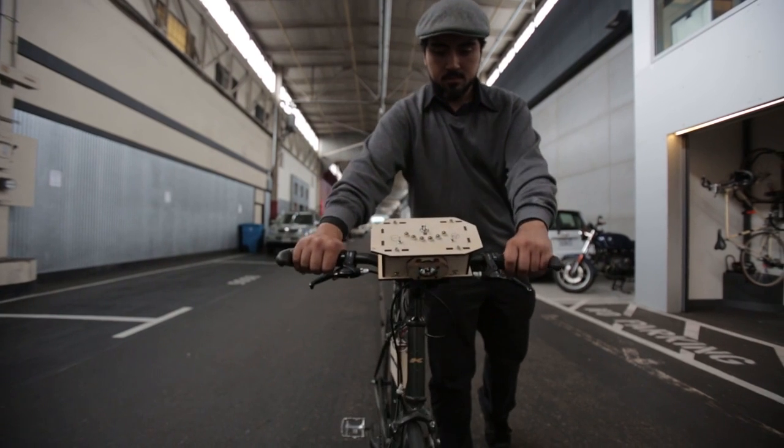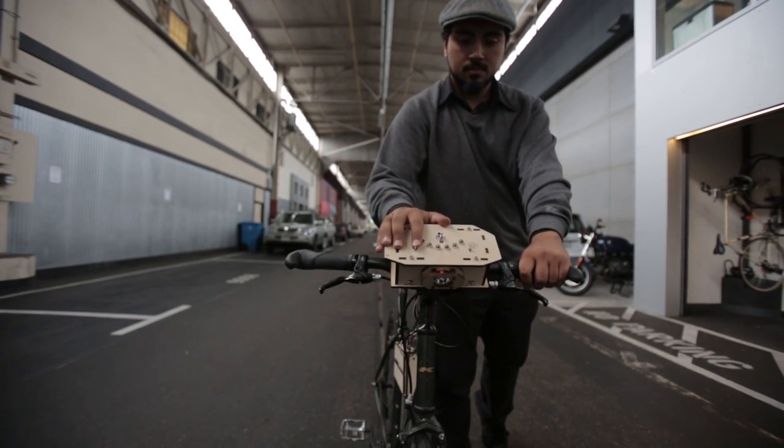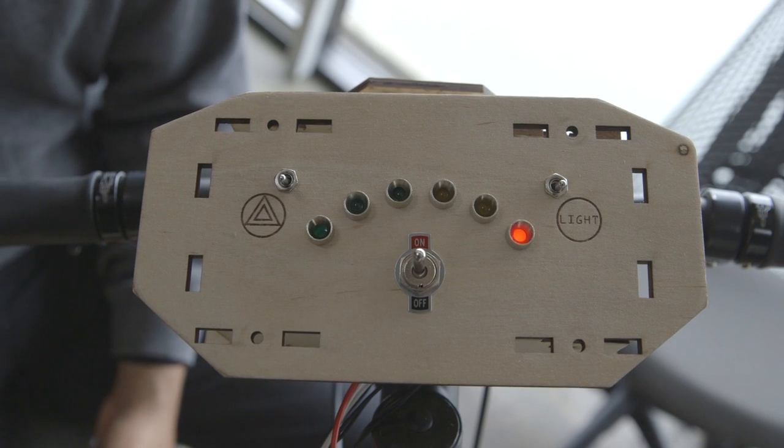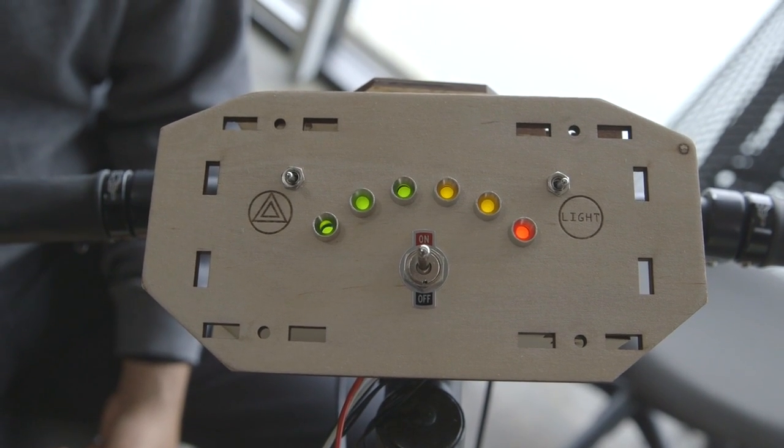Hey there, I'm DJ from Instructables and today I'm going to show you the bicycle dashboard that I made. The bicycle dashboard system gives you a speed readout and allows you to control your head and tail lights.